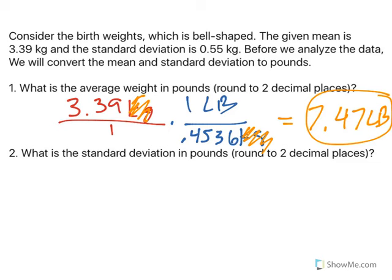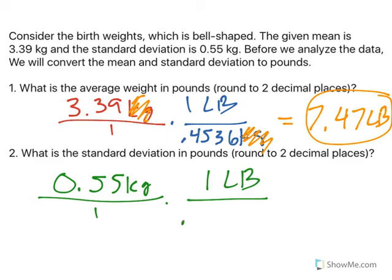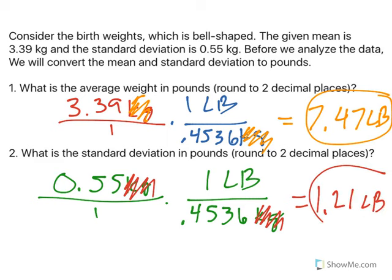We're going to do the same thing for the standard deviation. We start with 0.55 kilograms over 1, and we multiply by 1 pound over 0.4536 kilograms. Kilograms on the top cancels out with kilograms on the bottom. So I divide, and I'm left with 1.21 pounds. So I now have the mean of 7.47, and the standard deviation is 1.21.